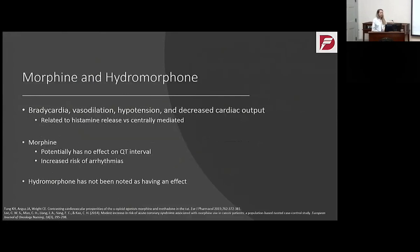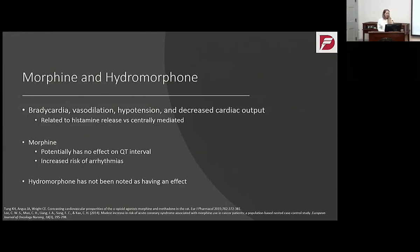Moving on to morphine and hydromorphone. The cardiovascular effects of bradycardia, vasodilation, hypotension, and decreased cardiac output are related to either histamine release or centrally mediated mechanisms. Morphine potentially has no effect on the QT interval — it doesn't have the potential to block potassium channels. However, a study in Taiwan found that breast cancer patients administered morphine had an increased risk of arrhythmias, but two attempts to duplicate the study could not replicate the results. Hydromorphone has not been noted to have an effect on QT prolongation or arrhythmia risk.